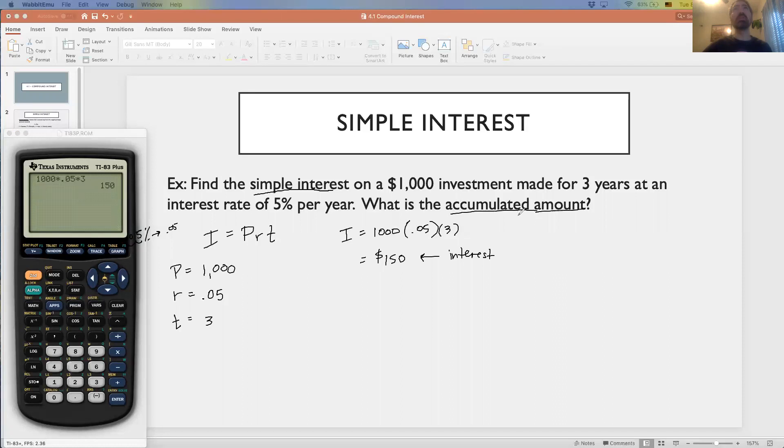But there's a second question - what is the accumulated amount? The accumulated amount is found using that second formula that we saw. Of course, once you find the interest, you can simply find the accumulated amount by adding the $1,000 plus the $150, so our answer should be $1,150. I'm going to work through this using that second formula just so you can see how that works.